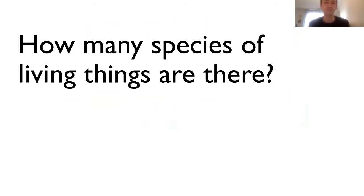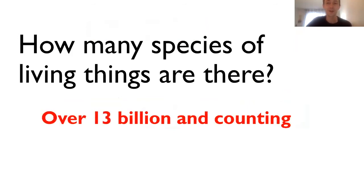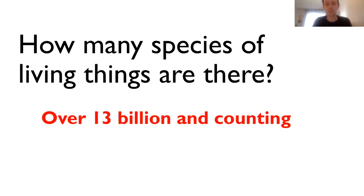How many different species of living things are there? I bet you could name a lot, but how many do you think there are on Earth? Take a guess, and then we'll see how close you were. The answer is over 13 billion and counting. It's crazy to think about that amount. And why is it so high? Well, a lot of them are really, really small things that we continue to discover. There are a lot of different living things, and because we've got so many, we need a way to organize them.